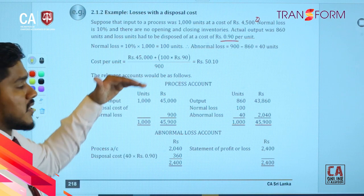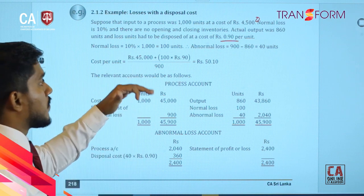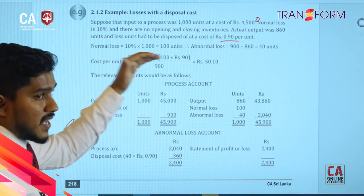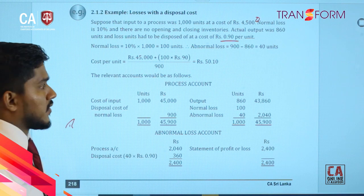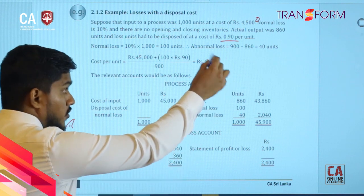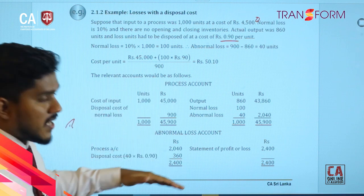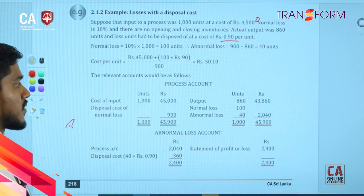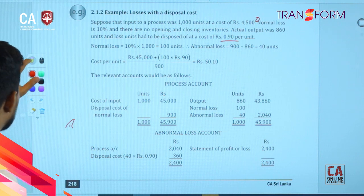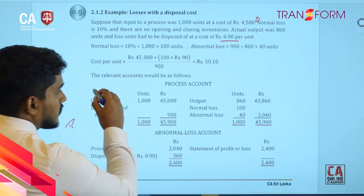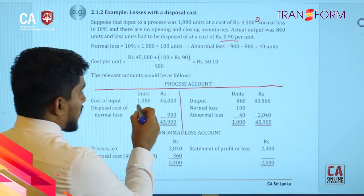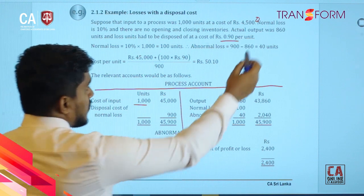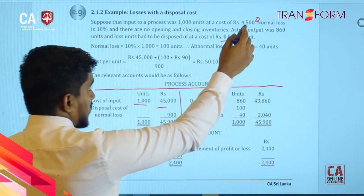The material cost is 45,000. Here you can see that you add the disposal cost to the material cost, then same as before you divide it by the expected output — which is material cost plus wastage disposal — to get cost per unit. I will show you how this has been done. Cost of input: 1,000 units, amount 45,000 — there is a correction, it should be 45,000.